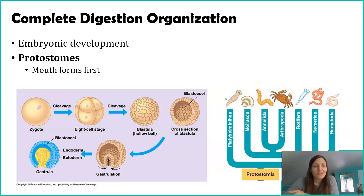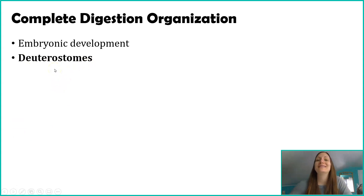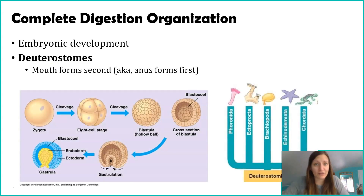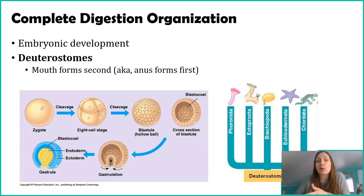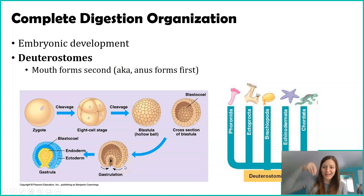The other type of classification is deuterostomes. Here's that 'stomes' again, meaning mouth. Deutero refers to second, so deuterostomes means 'second mouth,' meaning the anus forms first. You can say it either way: the mouth forms second, or the anus forms first. When you're only a couple hundred cells, that embryo starts forming the digestive tract and it's just the anus end that forms first.